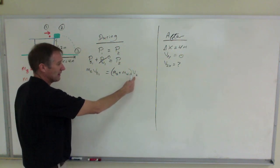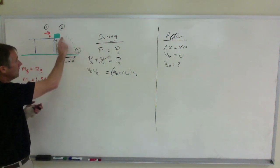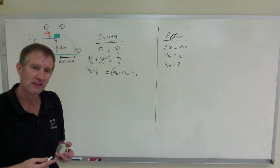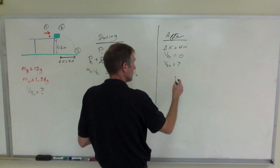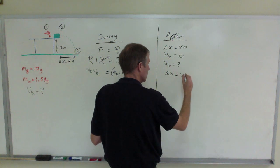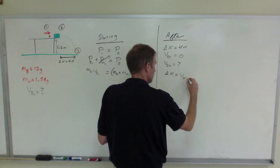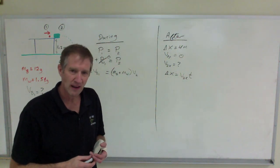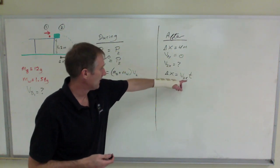They get stuck together, so you add up the bullet plus the wooden block times their velocity at point 2. The velocity with which the system goes off the edge horizontally is v2x, which is the initial velocity in the x-axis of the projectile. To find that, delta x equals v2x times t. There's no acceleration in the x-axis for a projectile, ignoring air resistance, so we just need to find time.